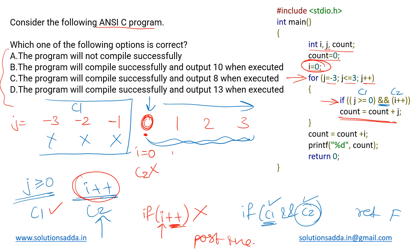Now i has become one. When we reach j equal to one in the next iteration, c1 is definitely satisfied. For c2, if(i++), the value of i considered is one, so c2 is also satisfied. i is then incremented to two for the next iteration. Both conditions are now met.